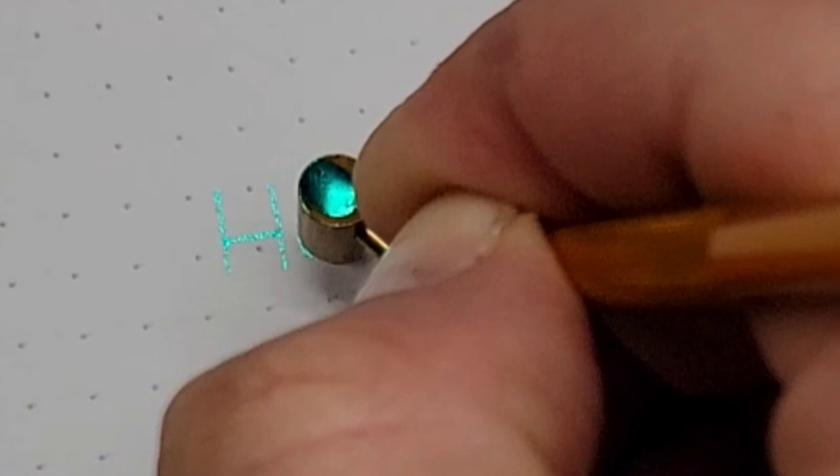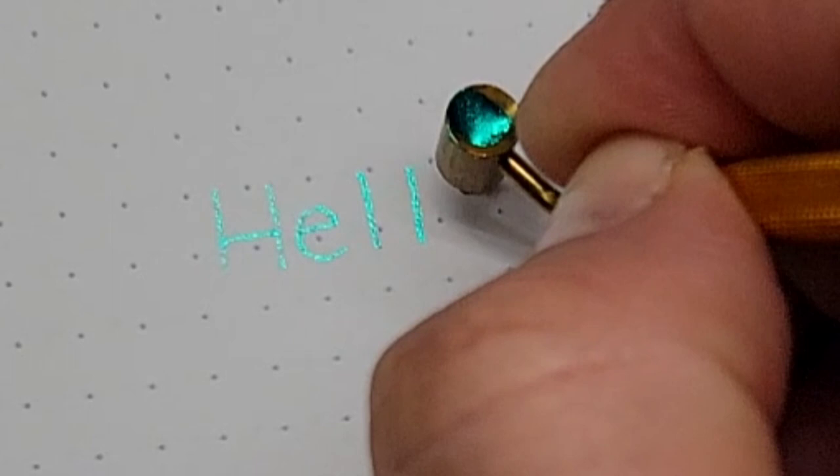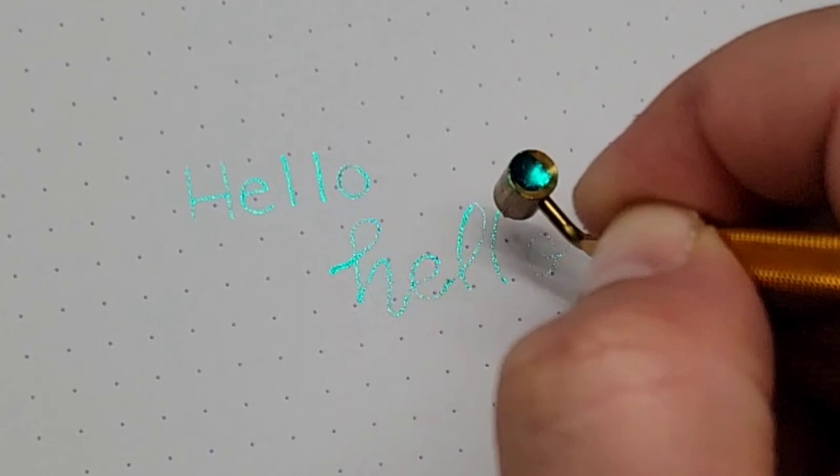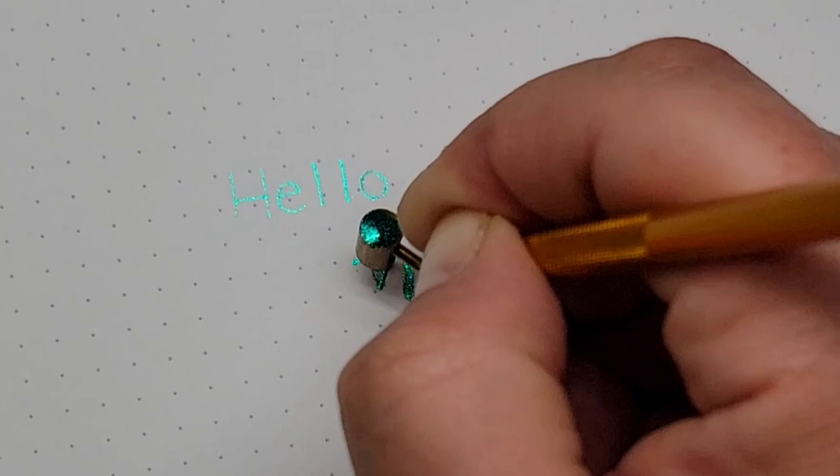I started out just writing on paper to try and get a feel for the pen and how quickly the paint does or doesn't flow out. What I started to discover is it felt like it was running out of paint even though I could see that it wasn't.